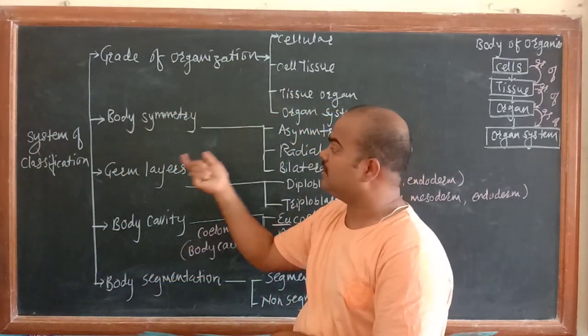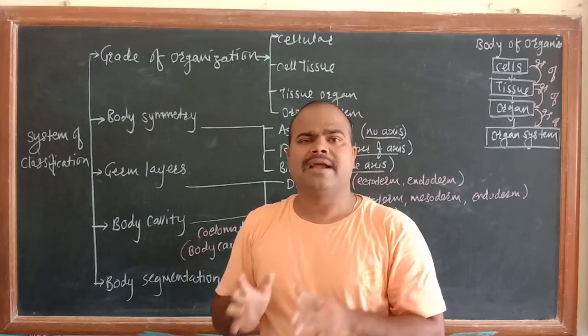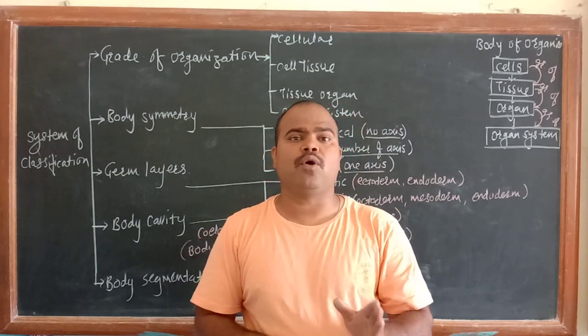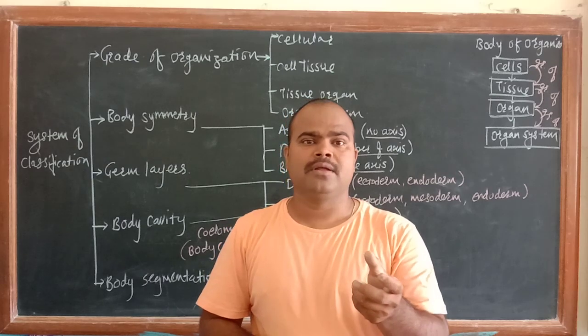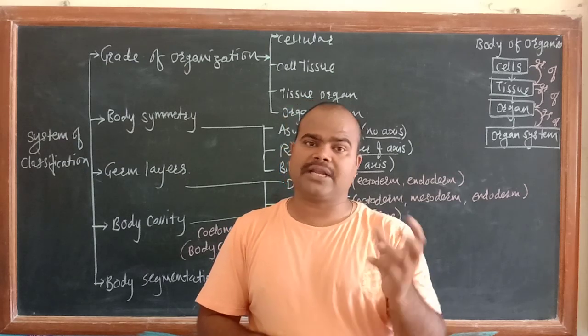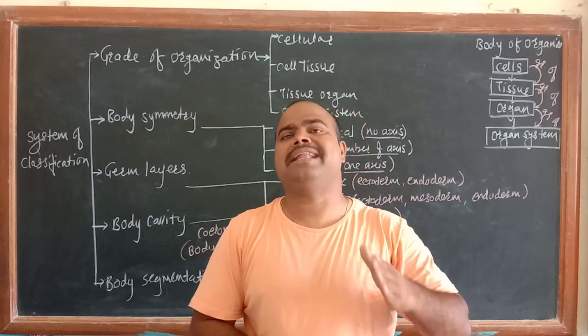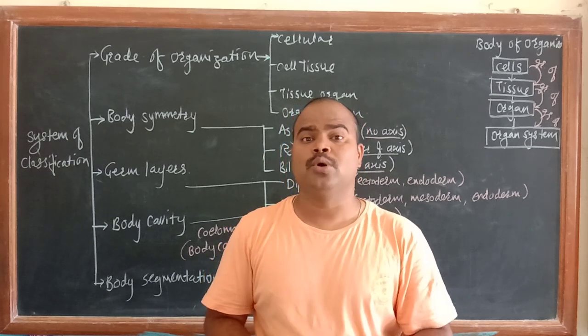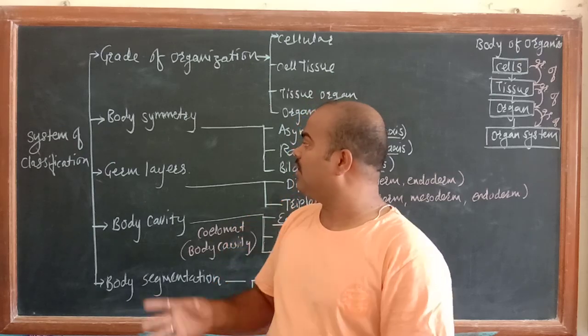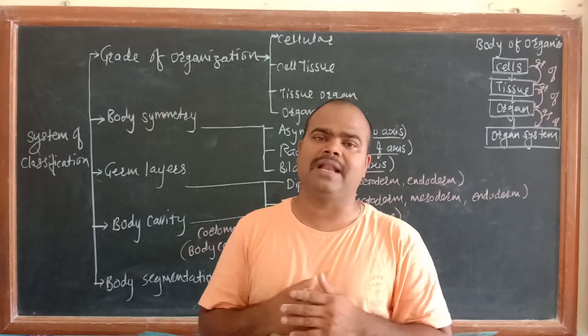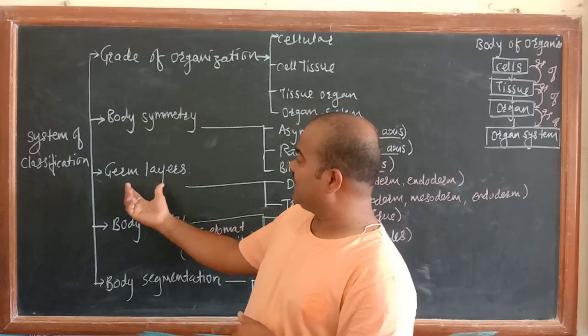Second is body symmetry. If you want to cut any lemon, the lemon has a circular sphere, and this sphere can be cut on any side into equal halves. It's a kind of symmetry where we can cut into two equal halves.